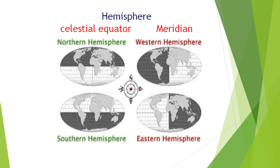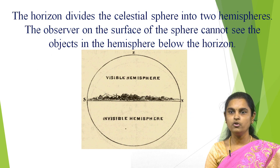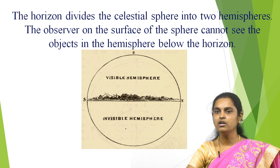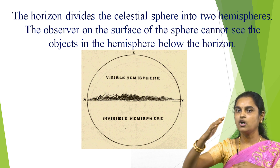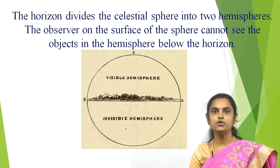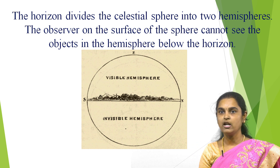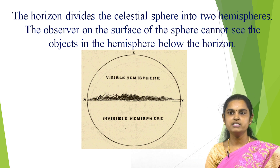The celestial equator divides the celestial sphere into two regions. The region containing the north pole is called the northern hemisphere and the region containing the south pole is called the southern hemisphere. Similarly, the meridian divides the celestial sphere into two regions: the region containing the west point is the western hemisphere, and the region containing the east point is the eastern hemisphere. An observer standing on the celestial sphere can only view the region above the horizon; the region below is invisible. The horizon divides the celestial sphere into the visible and invisible hemispheres.